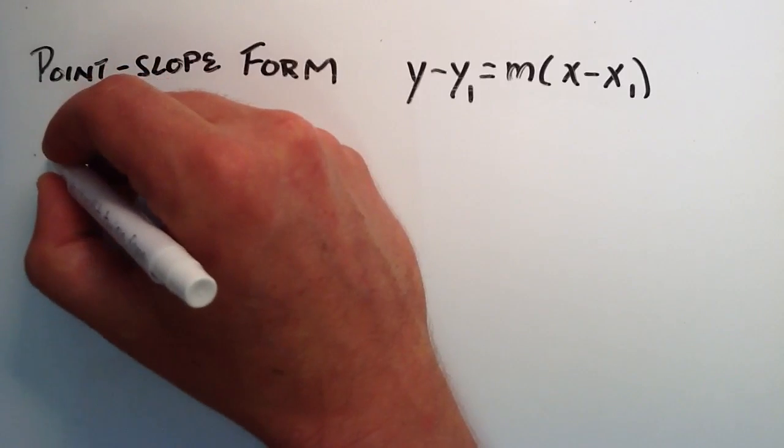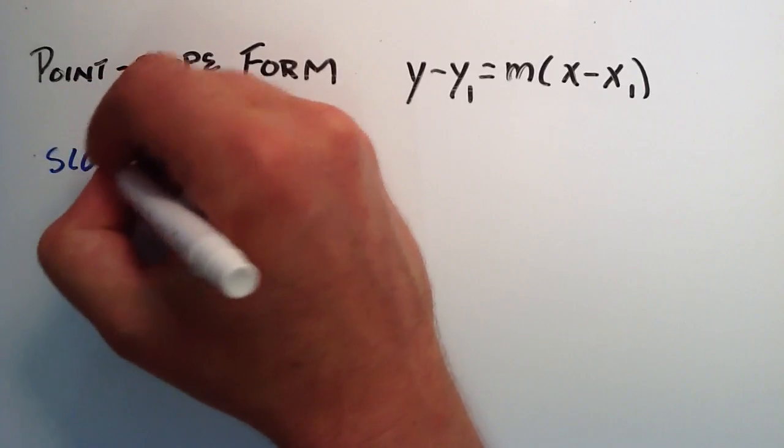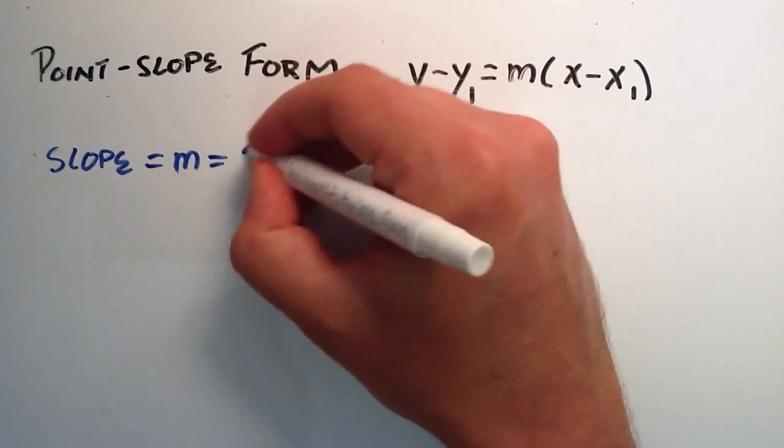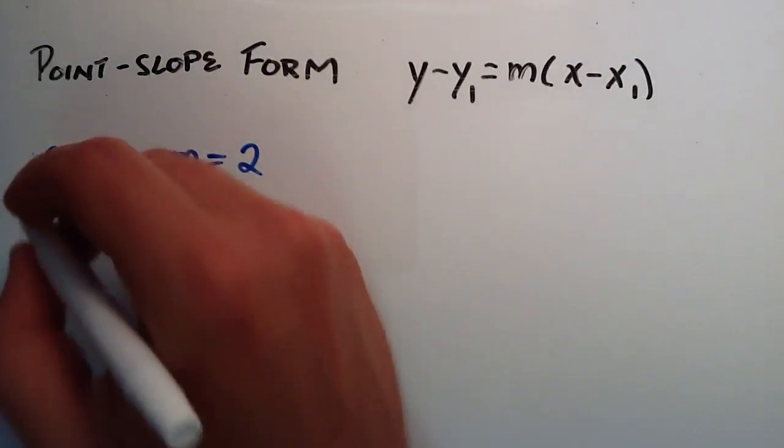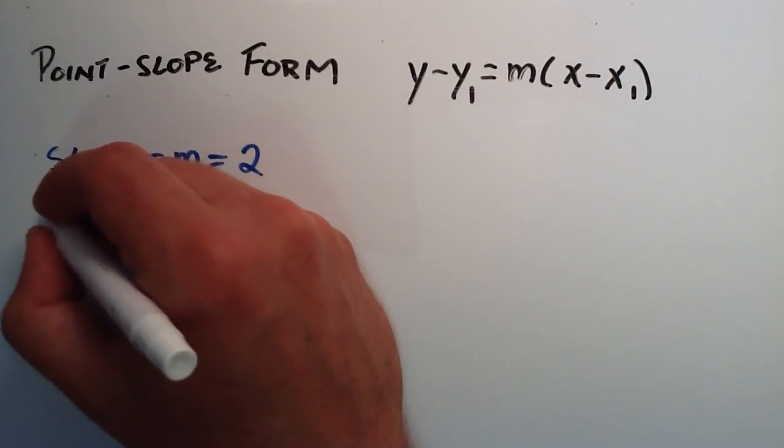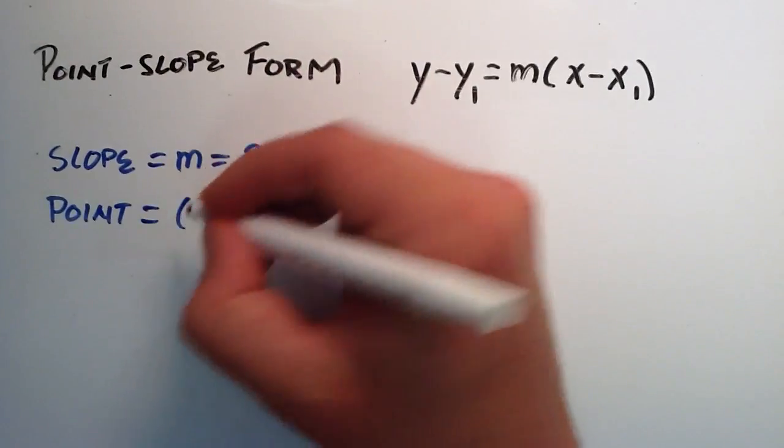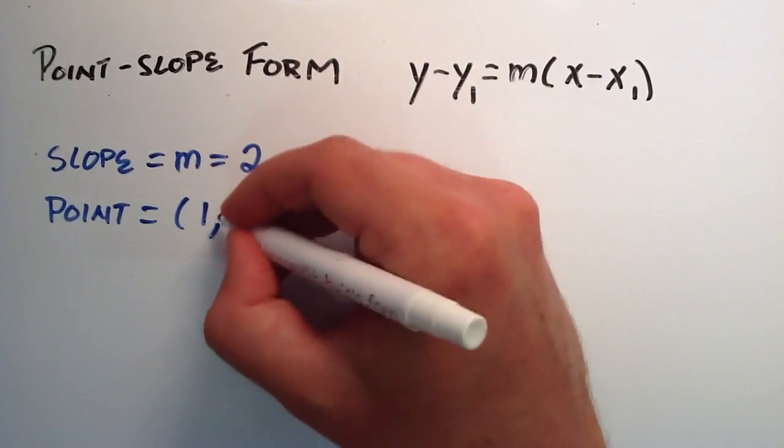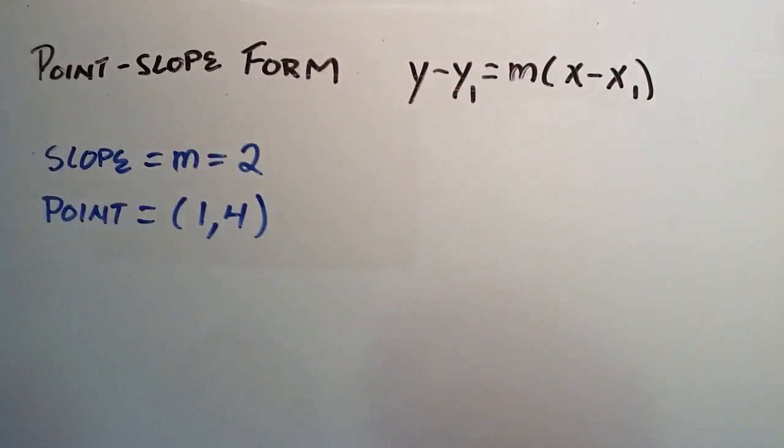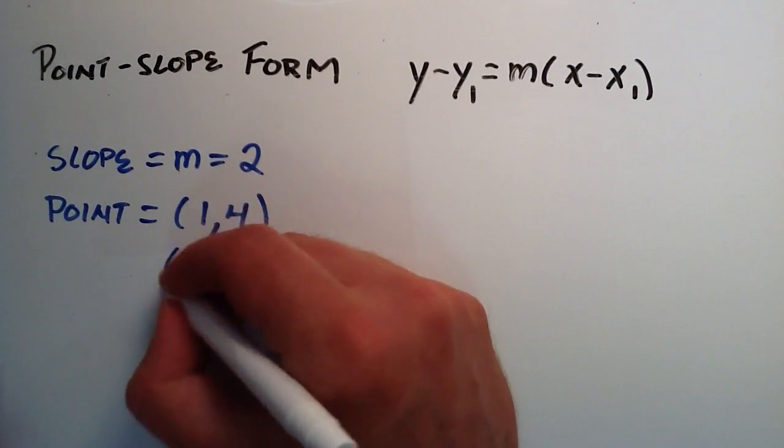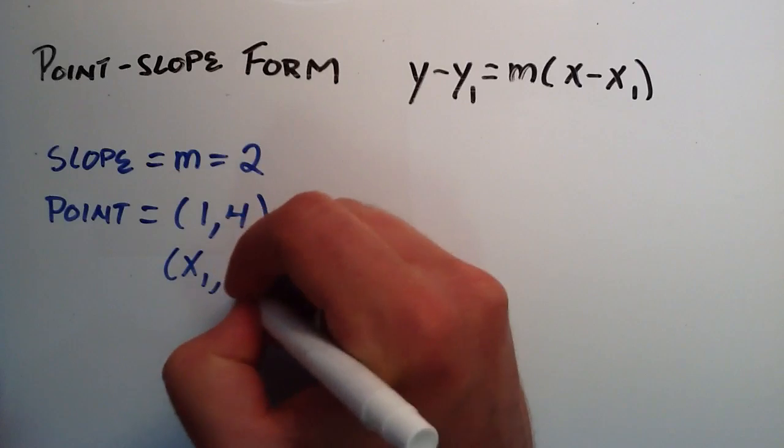So let's say that we have the slope of 2, and the slope is usually referred to as m, and we have a point on the line equal to (1, 4). So our (1, 4) is really just our (x₁, y₁).